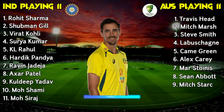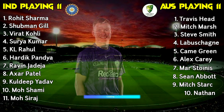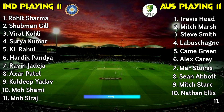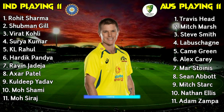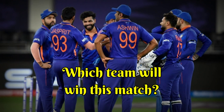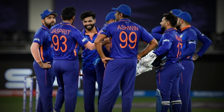Australia Number 9, Mitchell Starc, fast bowler; Number 10, Nathan Ellis, fast bowler; Number 11, Adam Zampa, spin bowler. Dear viewers, which team will win this match? Please comment below, share, and see you next week. Bye bye!